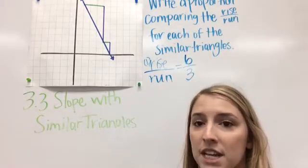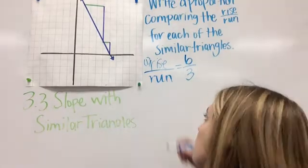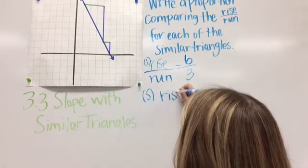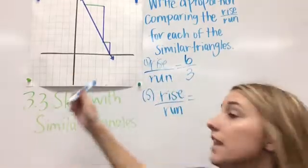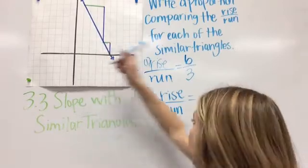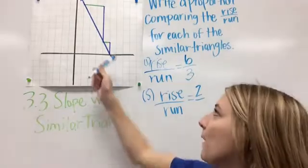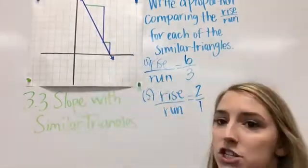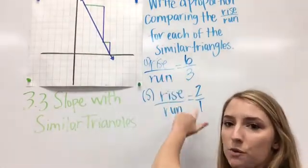Now, we need to find the rise over the run for the smaller triangle. So, I'm going to put an S. Rise over run. So, again, the rise is in the purple here. So, we rose one, two, and we ran down the street. Just kidding. We ran one. Okay, so the rise over run for the large is six over three. And for the small, it's two over one.